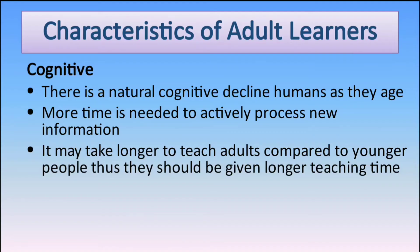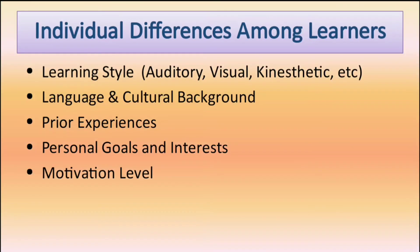Cognitive characteristics: There is a natural cognitive decline in humans as they age. More time is needed to actively process new information. It may take longer to teach adults compared to young people; thus they should be given longer teaching time. Adult learners still learn many different things, but they may need more class periods or lectures to absorb the content. Now let's talk about individual differences among learners.